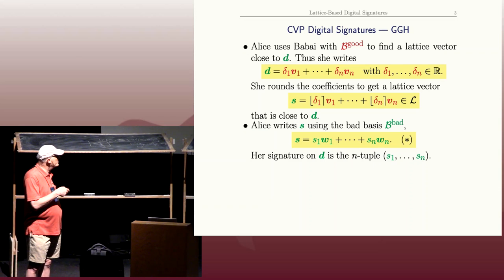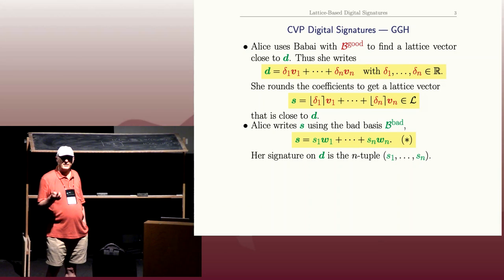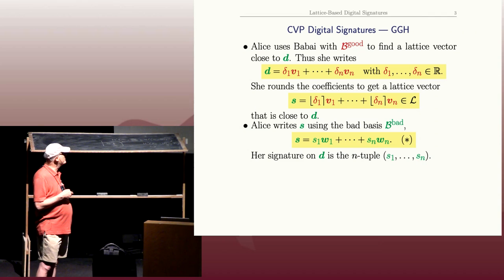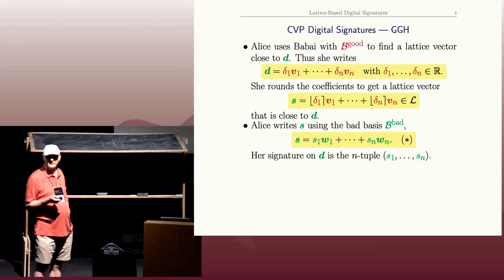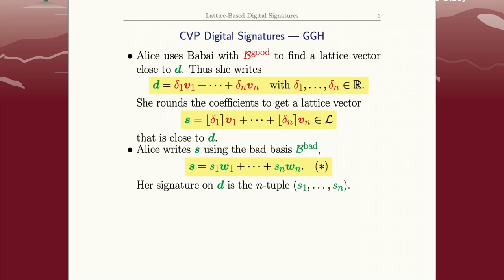Her signature is this vector s. She needs to tell Bob and the whole world this vector s without revealing her good basis, and she does that by expressing s using the bad basis. Again, that's just a linear algebra problem—undergraduate linear algebra, solving a system of linear equations. Her signature is then the n-tuple of coefficients. Remember, the w's are already in the public domain; those are Alice's public key. Bob just needs the s_i's to reconstruct the s.